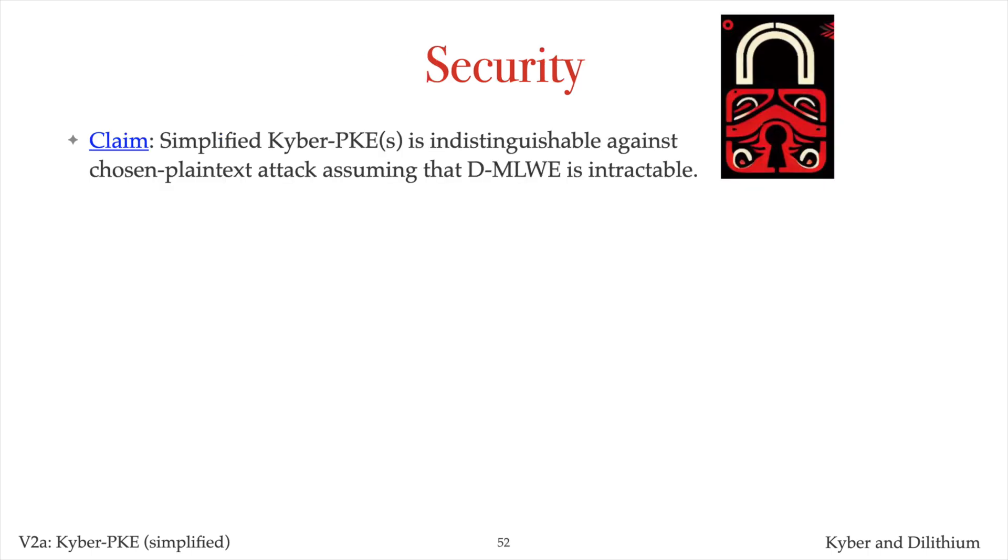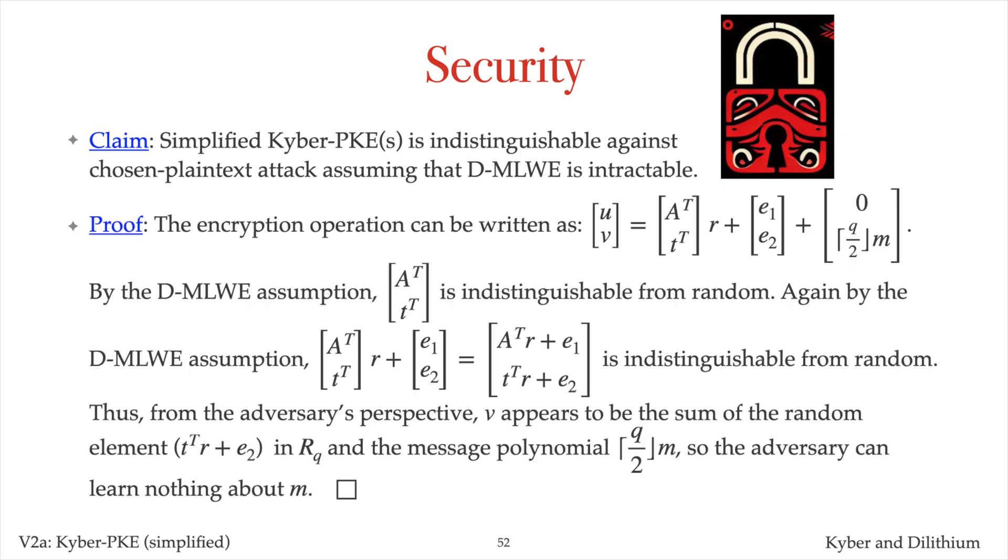Let me next explain why the simplified Kyber public encryption scheme is considered secure. More precisely, the simplified Kyber PKE is indistinguishable against chosen plaintext attack, assuming that the decisional MLWE problem is intractable. Chosen plaintext attack means that the adversary is given Alice's public key. Indistinguishable means that such an adversary is unable to learn anything at all about plaintext from ciphertext. To prove the claim, observe that the encryption operation can be written as the following matrix equation. Now, by the decisional MLWE assumption, T is indistinguishable from random. So this matrix is also indistinguishable from random.